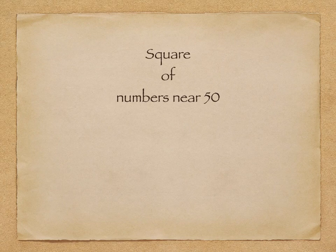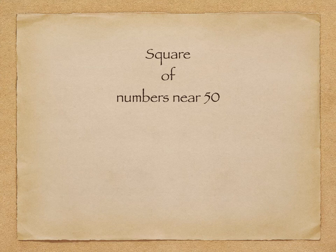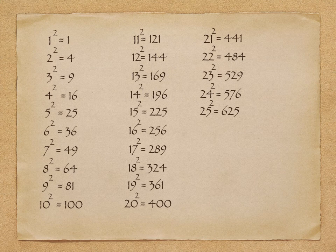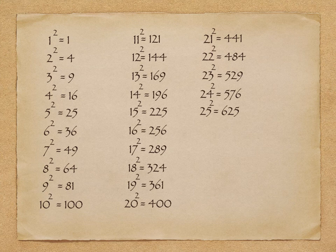Hello friends, in this video we are going to learn how to perform the square of numbers which are near 50. Before moving to the method, I would recommend you should remember all the squares till 25. These are all the squares till 25. We all know that 50 square is 2500.